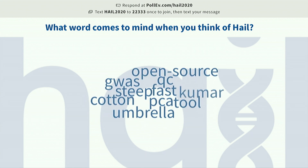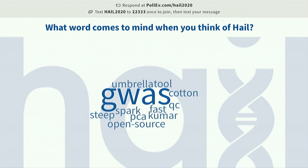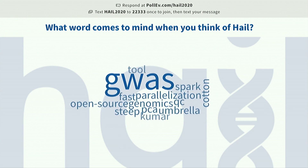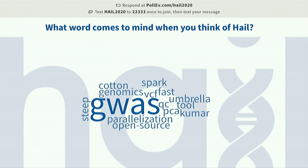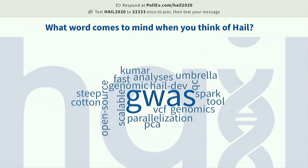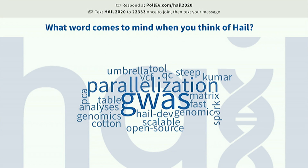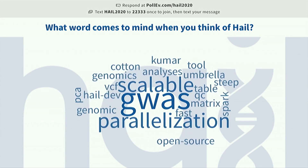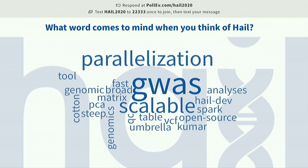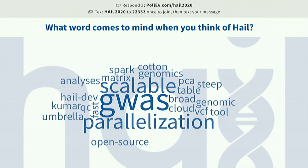PCA. Umbrella — now I'm just thinking of Rihanna. Spark. Fast parallelization — I love that that came out, because that's something we really work and strive towards. GWAS is winning and parallelization is winning. Scalable genomics is clearly resonating with our users.